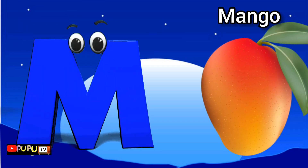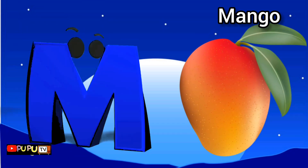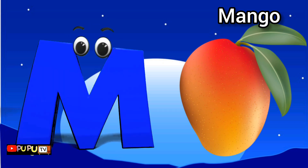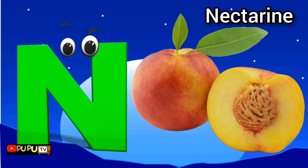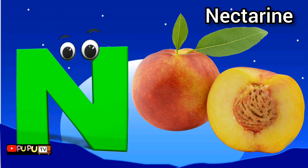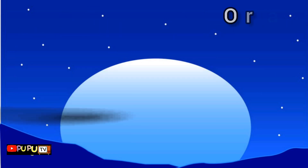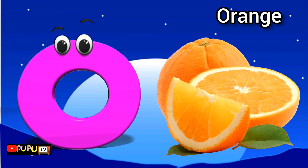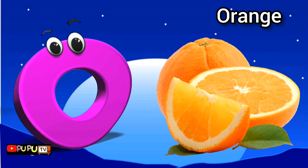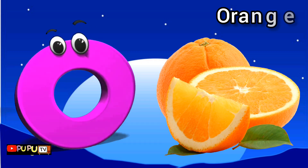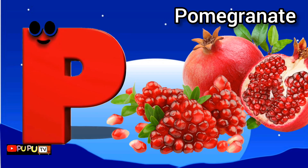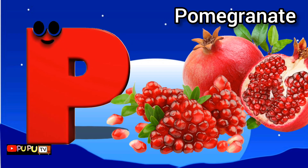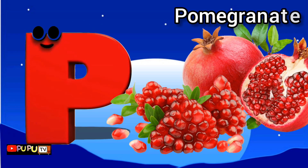M is for mango, ma-ma, mango. N is for nectarine, n-n-n-n-nectarine. O is for orange, o-o-orange. P is for pomegranate, p-p-pomegranate.